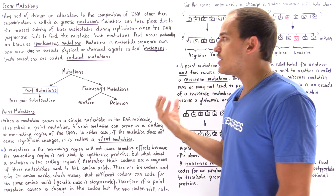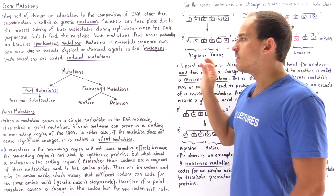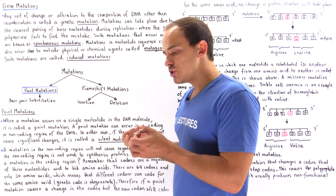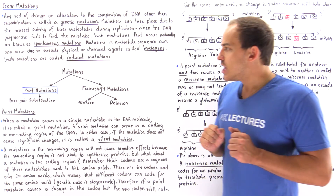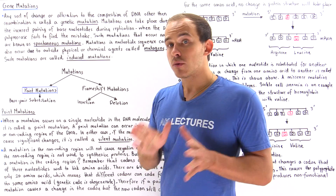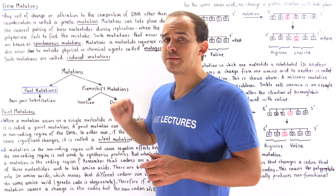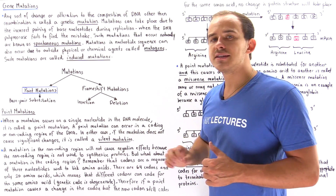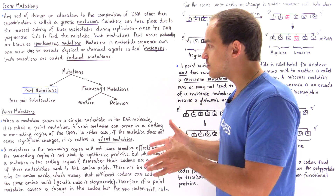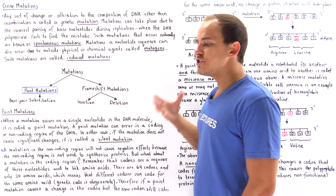So we have two reasons why mutations take place: they occur spontaneously or are induced by outside factors. Mutations can also be categorized by type. We have point mutations, also known as base pair mutations or base pair substitutions, and we also have frameshift mutations, which include insertion mutations and deletions. In this lecture, we're going to focus primarily on the point mutation, also known as a base pair mutation.